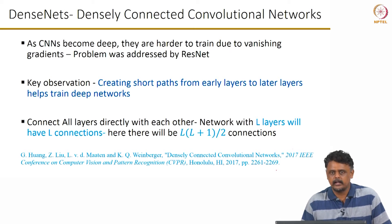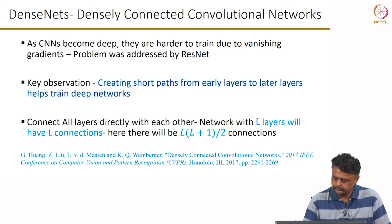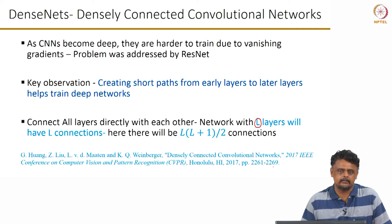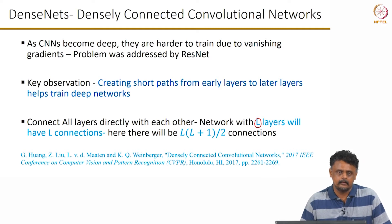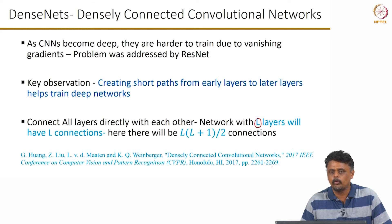In a typical network with L layers, there will be L connections between the layers. However, in a DenseNet there will be about L×(L+1)/2 connections. We will see what we mean by that in the next slide.